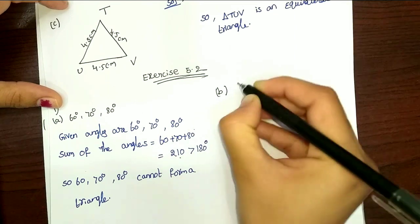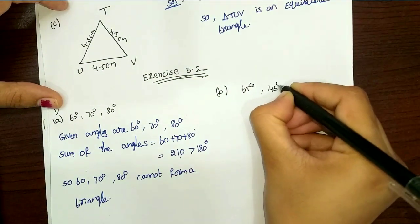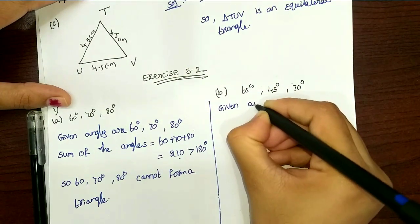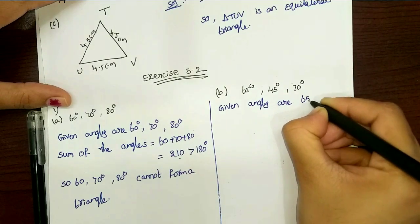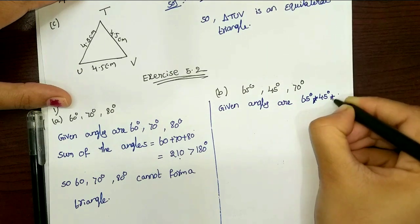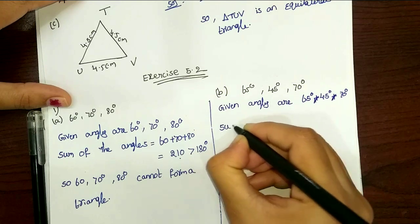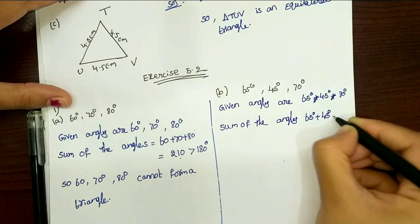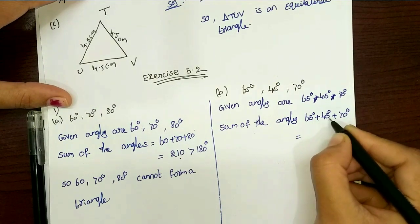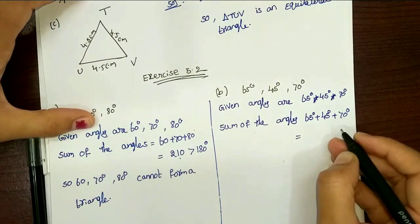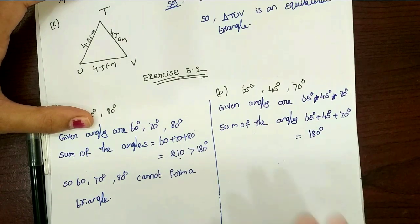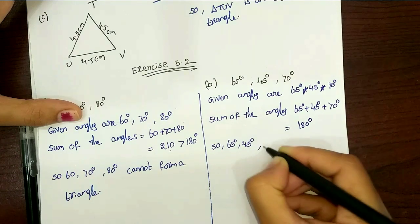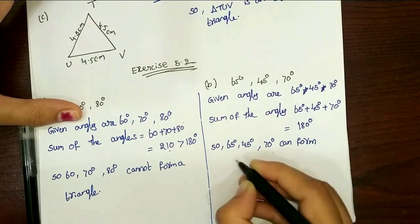Next, part (b): given angles are 65, 45, 70. Sum of the angles: 65 plus 45 plus 70. So 65 plus 45 is 110, and 110 plus 70 is 180. So the sum is exactly 180.